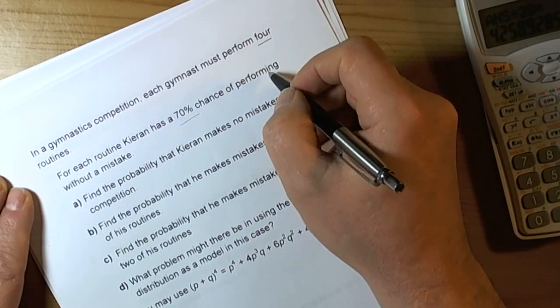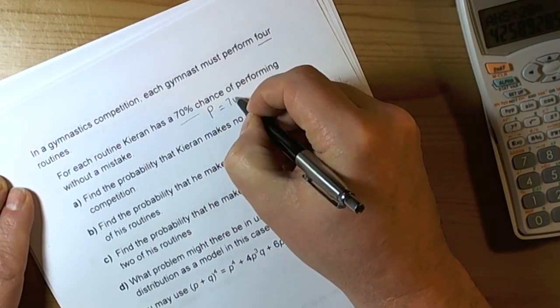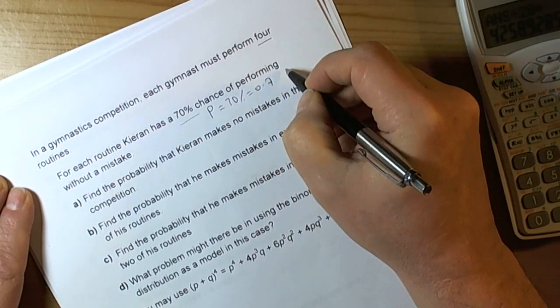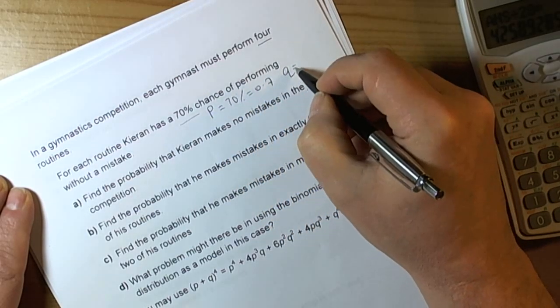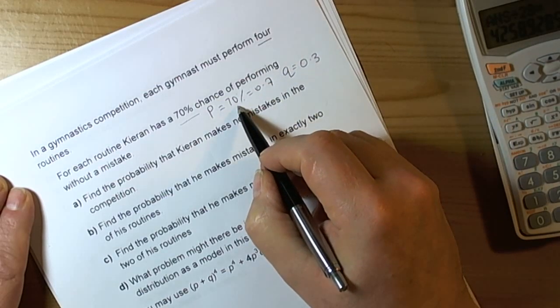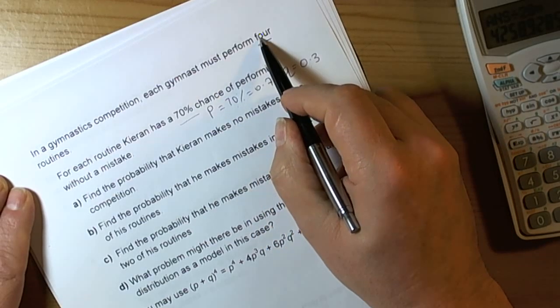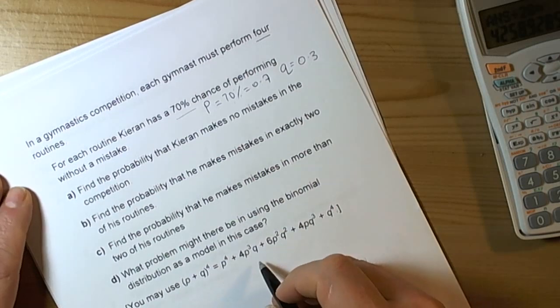Therefore there's two probabilities. Probability of success is performing, so our p-value will be 70% or 0.7, and our q-value will be 0.3. So there's only two possible outcomes: success (no mistakes), fail (a mistake). And it's a fixed number of trials. So we do have a binomial situation.